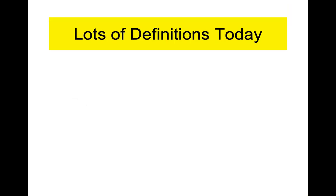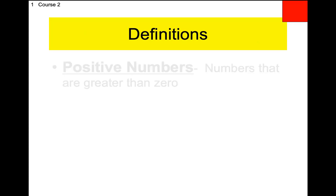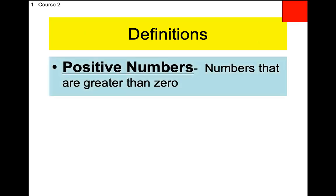Lots of definitions today. Two of the definitions are confusing, but the rest are okay. So let's write them down. Box one: positive numbers. Positive numbers are numbers that are bigger than zero. By definition, if you are positive, you are greater than zero. That includes decimals, fractions, and irrational numbers, but it also includes the whole numbers, which is what we'll be talking about today.